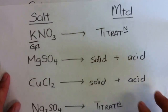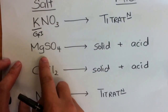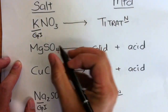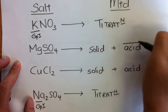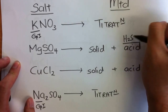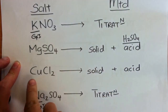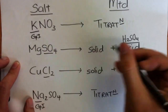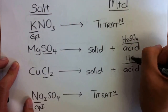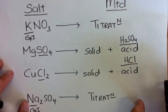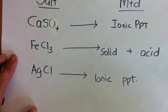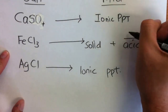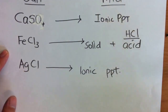Now let's take it further. If this is magnesium sulfate, what would be the acid to use? Sulfate — so I will use sulfuric acid. If this is copper chloride — chloride — I will use hydrochloric acid, HCl. For iron chloride, I will use hydrochloric acid.